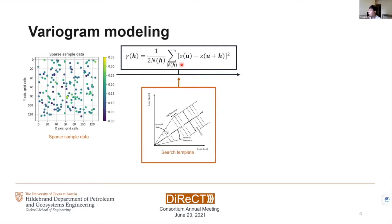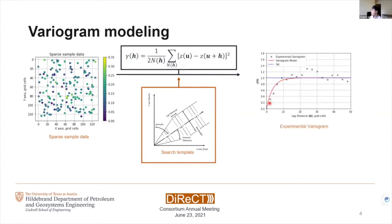To get pairs of data, we need to define the search template which consists of the lag interval, interval tolerance, azimuth, and azimuth tolerance. Once we define the search template, we can compute the experimental variogram, shown as black x dots. From the given experimental variogram, we need to fit a continuous variogram model that best fits the experimental variogram. From there we get a variogram model that can be used for any further analysis or kriging.